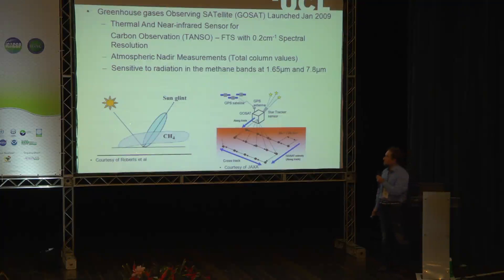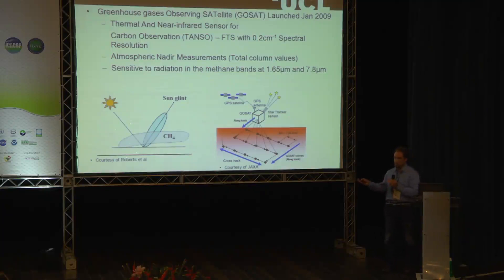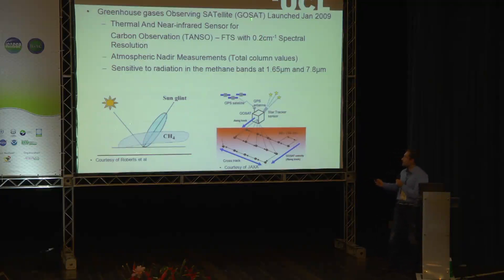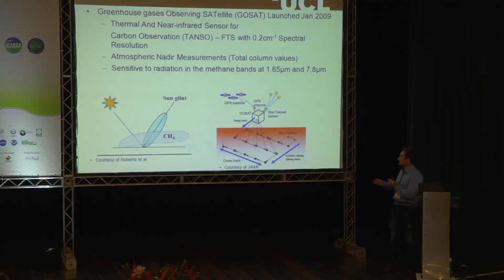The second instrument is GOSAT, and again we're using a Fourier Transform Spectrometer. GOSAT is a Japanese satellite launched by JAXA, and instead of taking limb soundings it takes vertical profiles, allowing us to generate the global map you saw earlier. The key issue is that it has lower resolution than ACE — about 0.2 wavenumbers — which becomes important when picking out carbon-13. Instead of a total radiation range, it has a number of bands; the key ones are 1.65 micrometers and 7.8 micrometers.